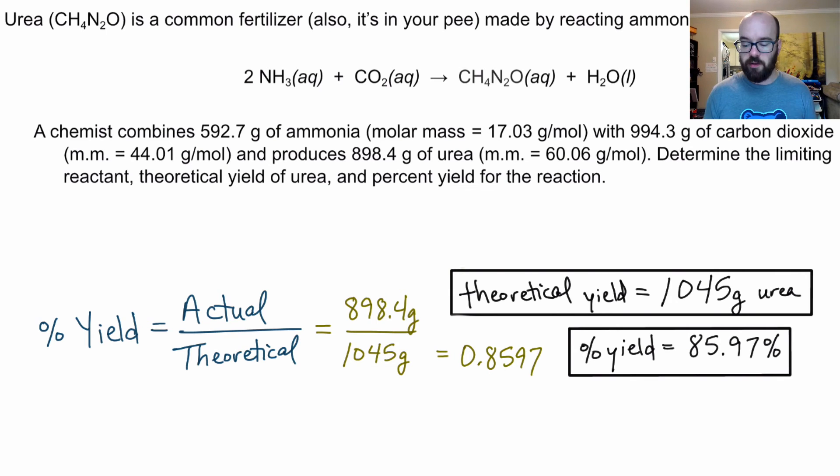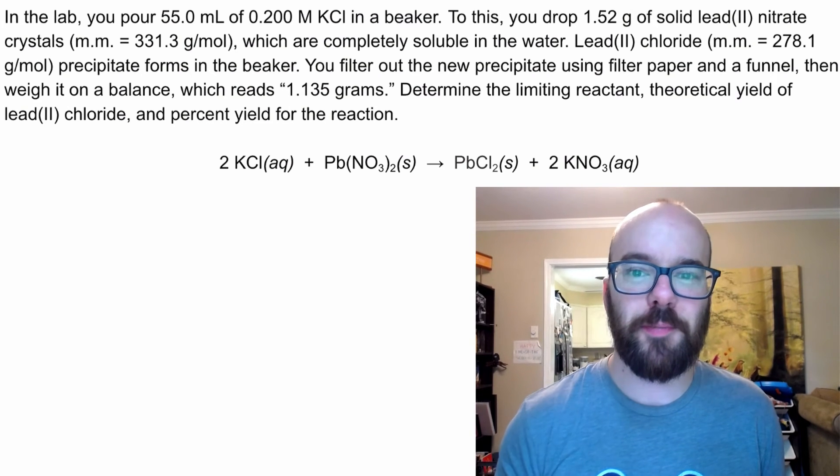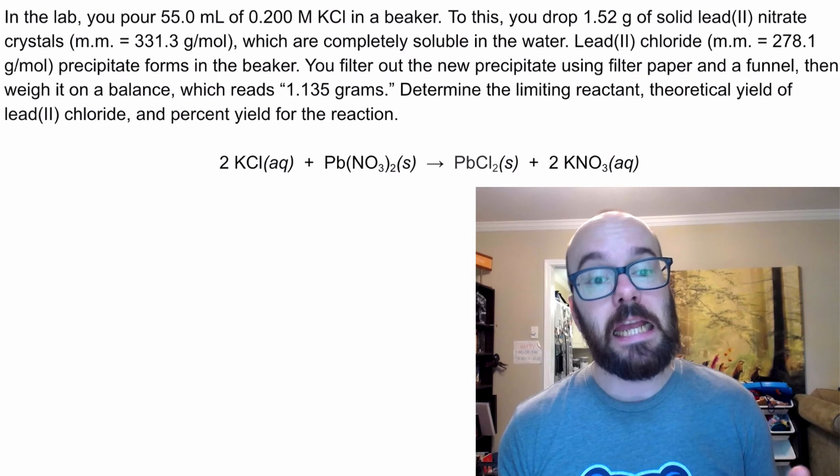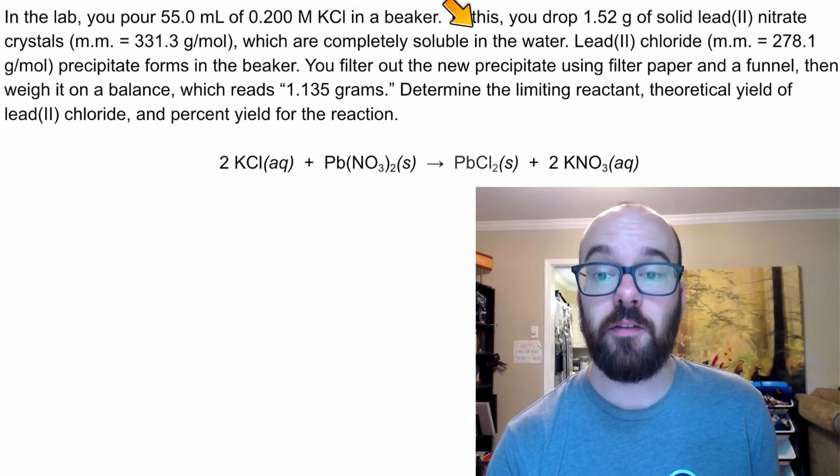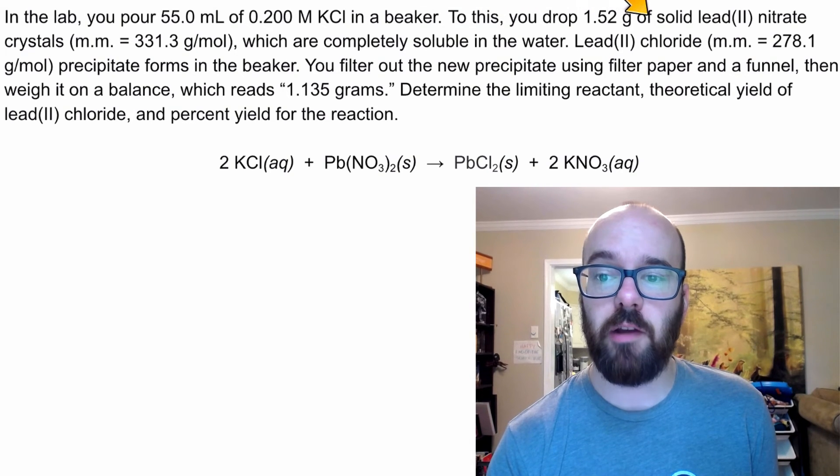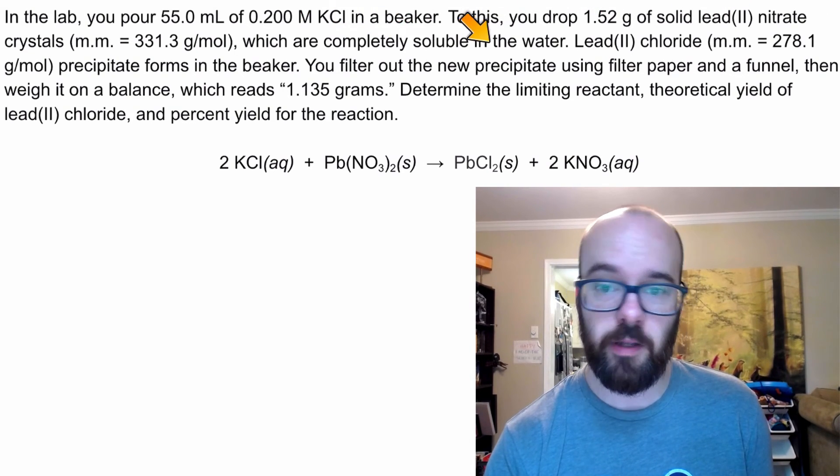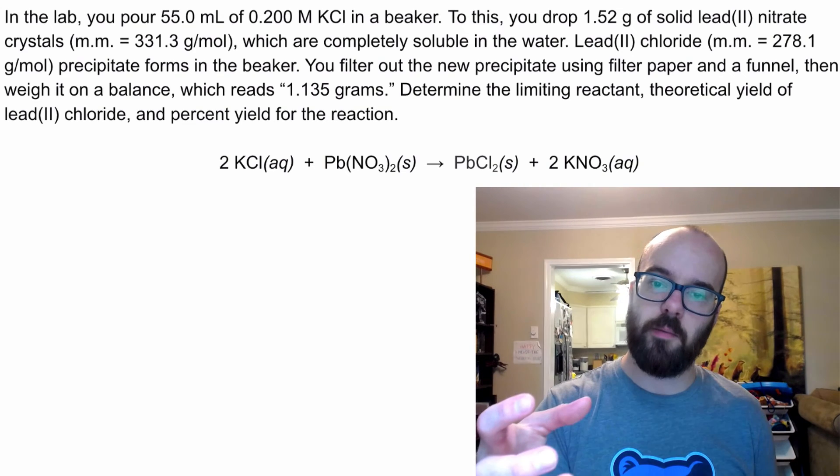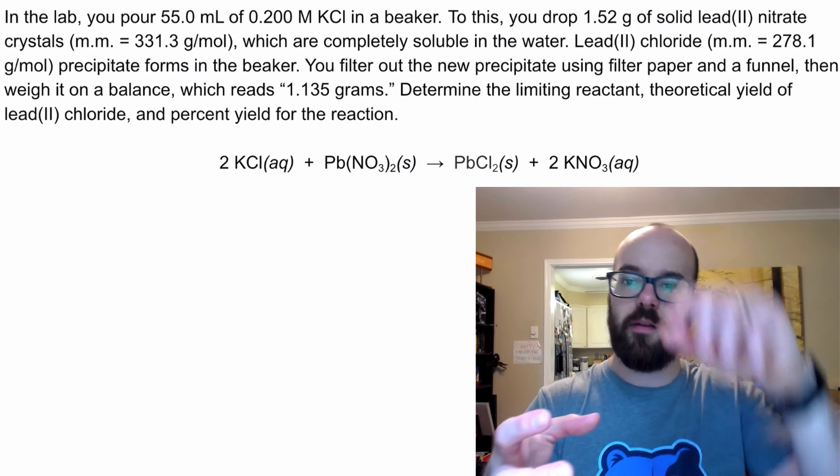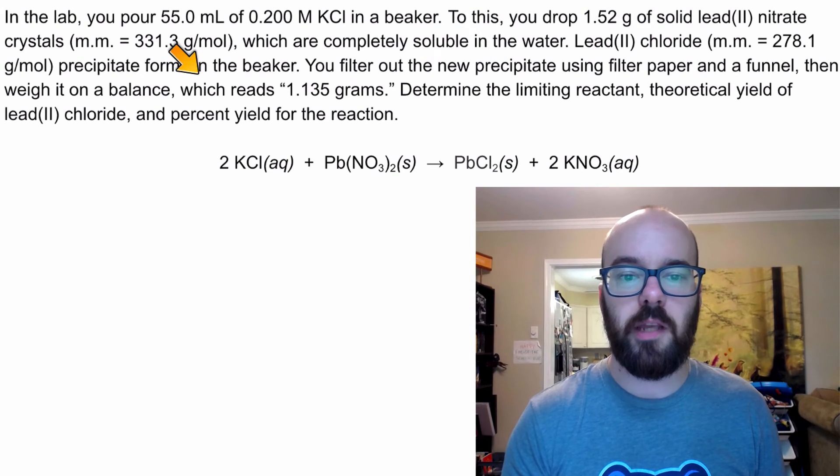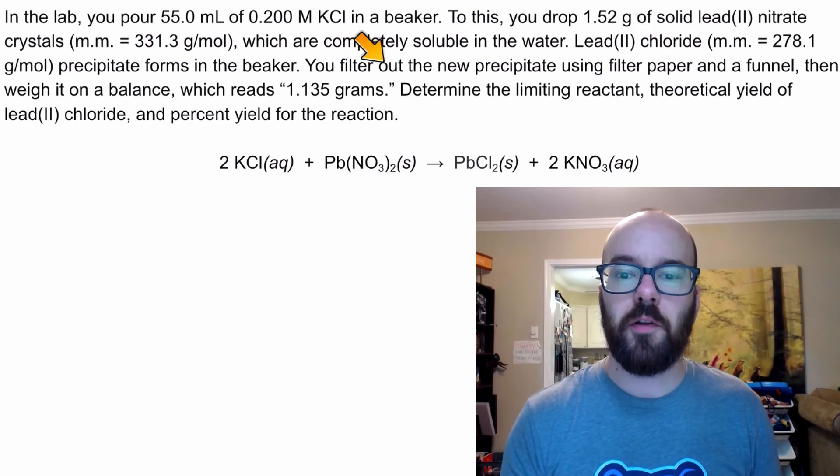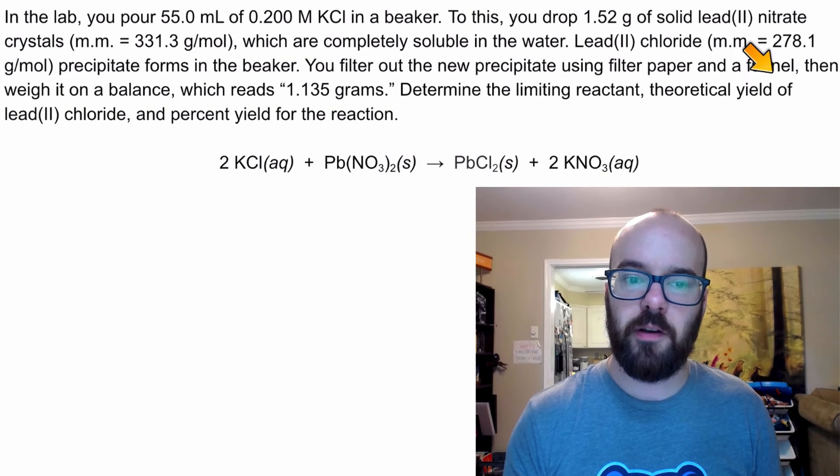I want to do one more problem, just so you can see another example. Here's our second problem. In the lab, you pour 55 milliliters of 0.2 molar KCl in a beaker. To this, you add 1.52 grams of solid lead(II) nitrate crystals, which are completely soluble in the water. Lead(II) chloride precipitate forms in the beaker.